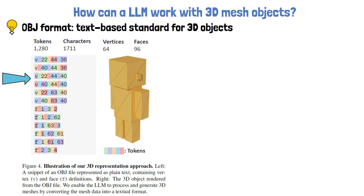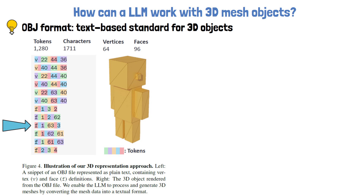Note, we only see here a sample of the representation in this example, since in practice there are more vertices. The rows that start with F represent faces, which specify a list of vertices that make up a surface.